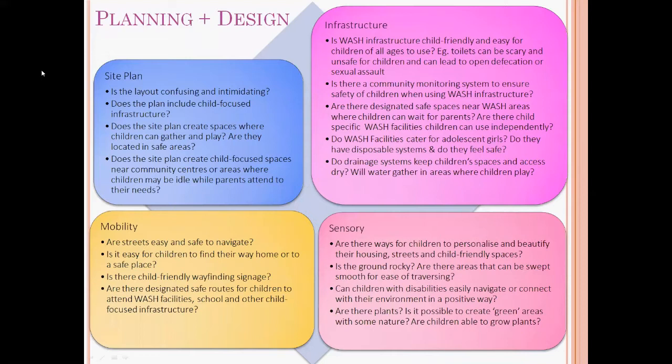Starting with the first part of the process — planning and design — the most critical thing is that even if you're not sure of all the ways children can be involved or the sorts of decisions they might make, the very first thing is to think about what impact the decisions will have on children, what might children have to say about what you're working on, how will these decisions impact them when they're actually living in these spaces, and how the spaces might change over time to continue impacting children.